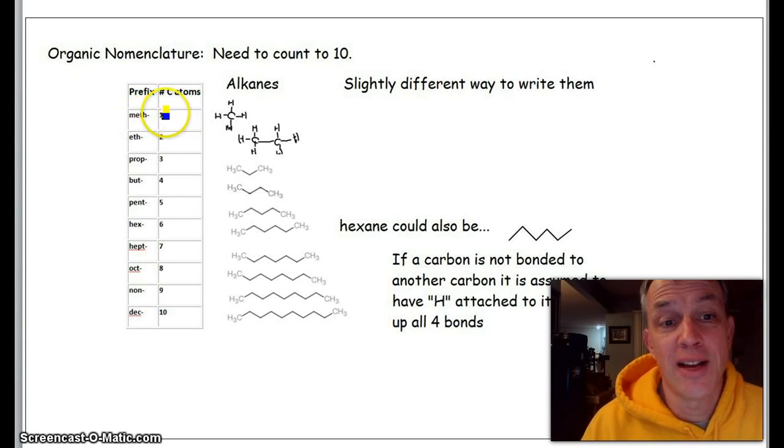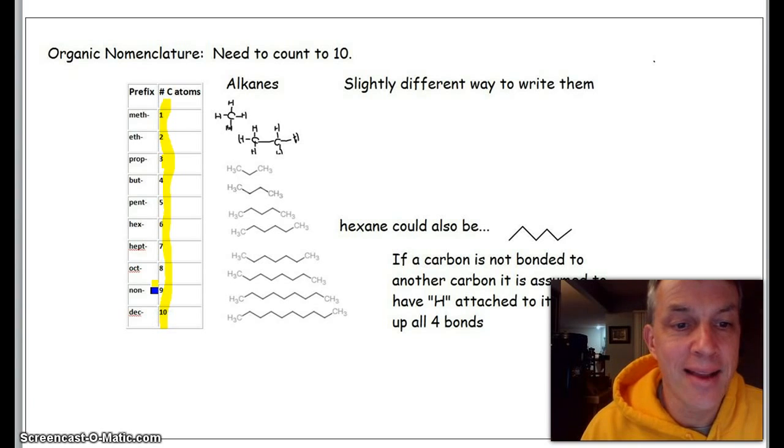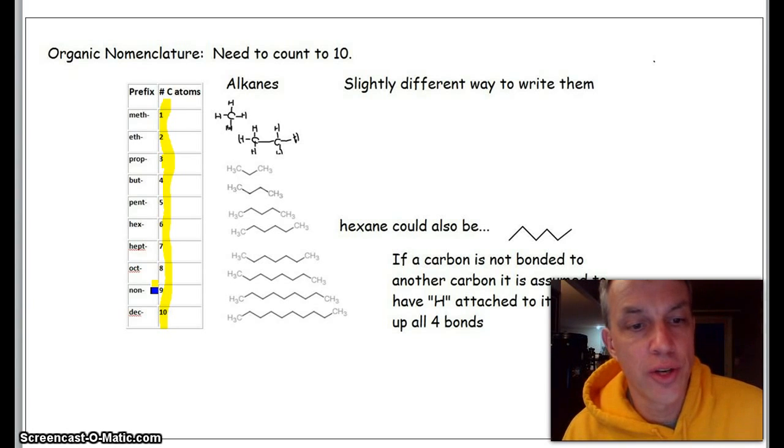What you're going to need to know for this are these prefixes: meth-, eth-, prop-, but-, pent-, hex-, hepta-, oct-, non-, or dec-. That means we've got one through ten carbons in a chain.